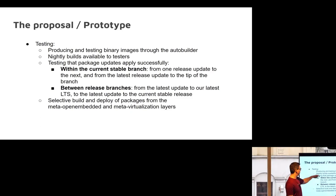The testing was going to be producing and testing binary image through the auto builder and also testing that package updates work and dealing with any issues in the recipes that arise. Within your current stable branch, you should be able to go from one release to the next and from the latest to the tip. And then between release branches, from the latest update to our latest LTS and the latest update to the current stable. It's not any to any, but that's a pretty broad set of updates. And then selective build and deployment of packages from the meta open embedded and meta virtualization layers.